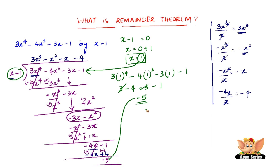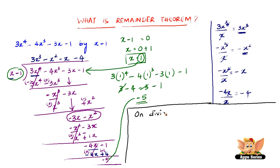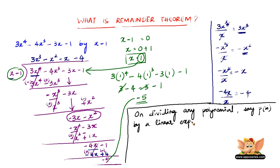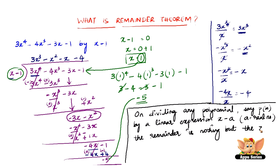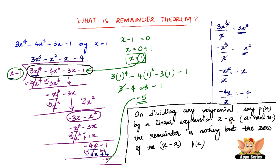The remainder theorem states that on dividing any polynomial p of x by a linear expression x minus a, where a is any real number, the remainder is nothing but the value obtained by substituting the zero of the divisor x minus a into the polynomial p of x — in this case, 3x to the power 4 minus 4x cube minus 3x minus 1.